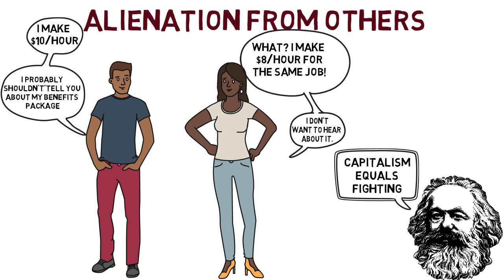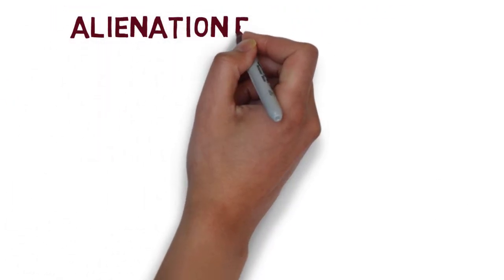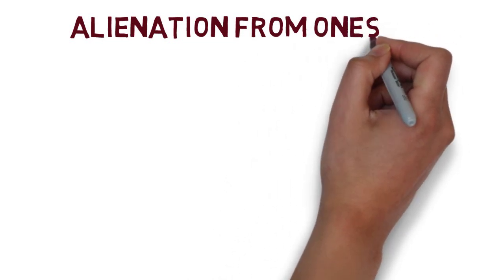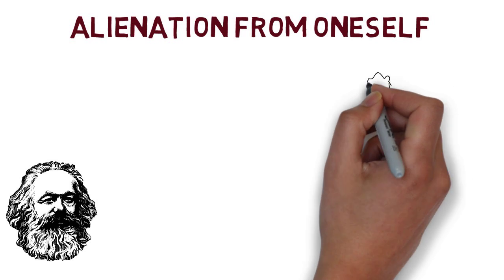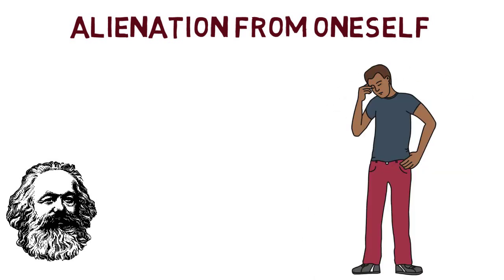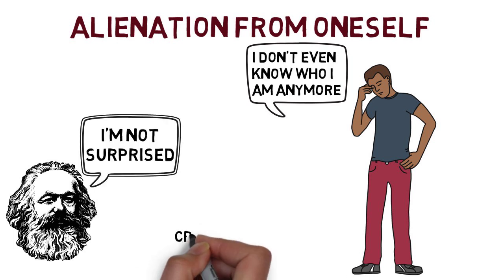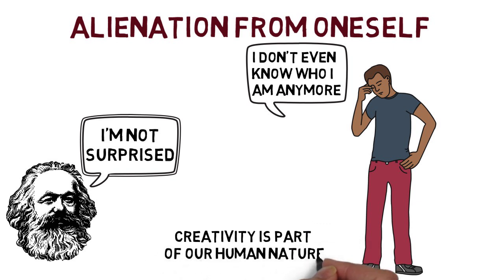The last type of alienation is alienation from oneself. Alienation from oneself robs a person of all they can be and contribute in the world. As stated, Marx believed that what we contribute to the world in terms of our work is part of our species essence or what makes us human. What we contribute to the world is a manifestation of our creativity and creativity is an essential part of our human nature.